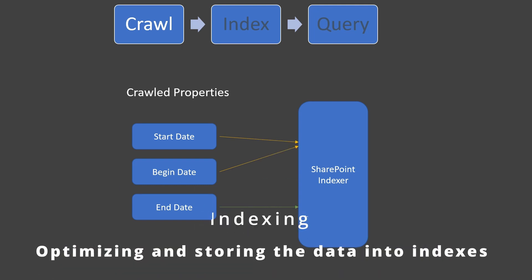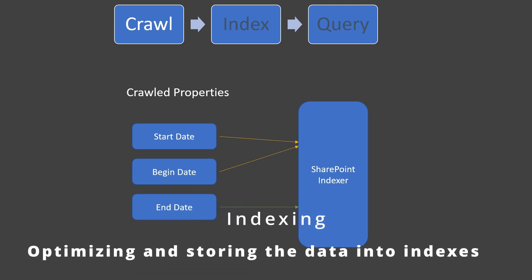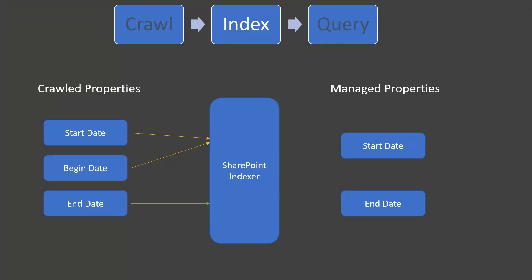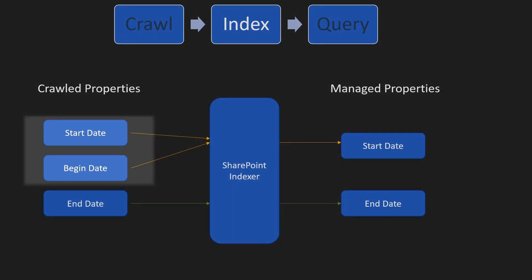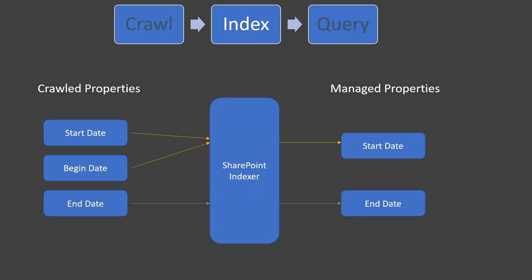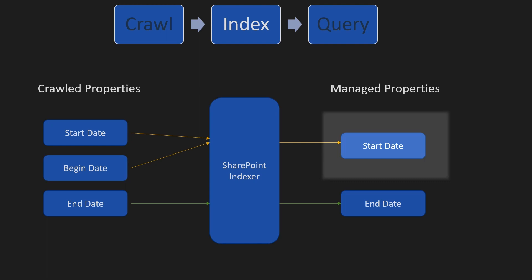As the data is crawled, it's fed into the indexer. This is an engine that processes the data, cleans it up, and does something known as mapping. It maps this data over to another set of fields called managed properties. The crawled properties are not needed anymore because managed properties take over. The reason you want managed properties is that it takes all of those different varied-name columns — start date, event date, event start date, any other variation — and maps them all to one single field in managed properties.